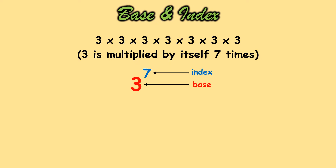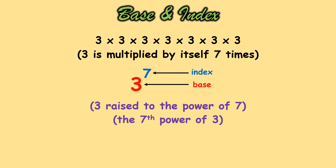What is the meaning of base and index? The base is the number that I'm multiplying, and the index — here 7 — indicates how many times I'm multiplying that particular number. I can read this as 3 raised to the power of 7, or 3 raised to 7, or the seventh power of 3.